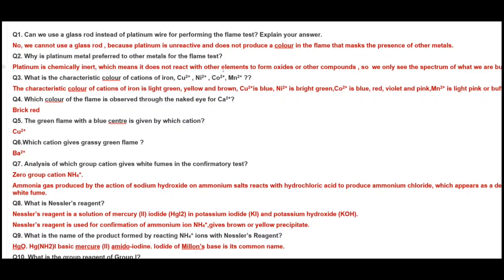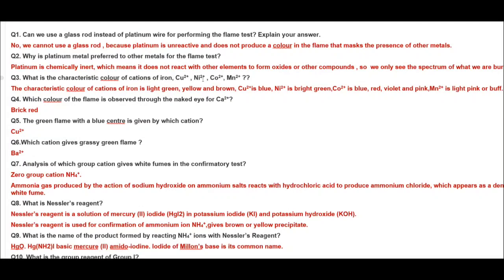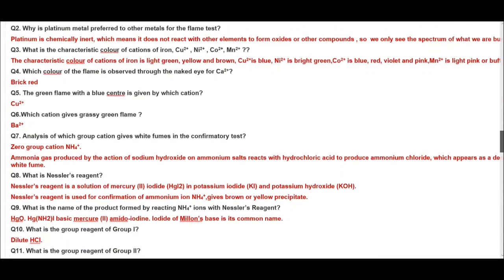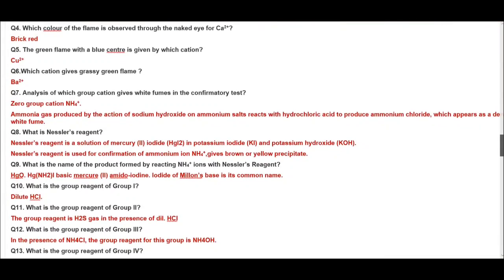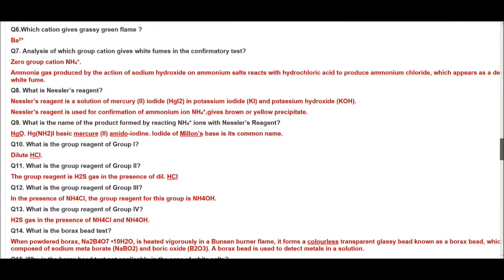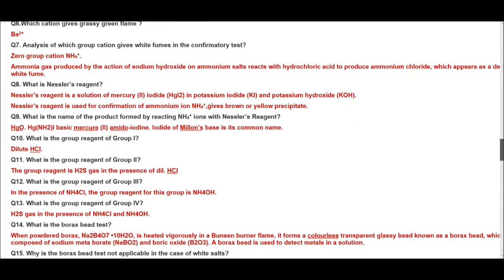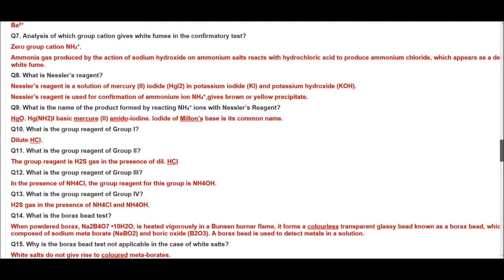Why is platinum metal preferred to other metals for flame test? Because it is chemically inert, it does not react with other elements to form oxides or other compounds which can interfere with our results. What is the characteristic color of cations of iron, copper, nickel, cobalt, manganese? Basically what is the color of salts of these ions generally - iron salts are light green, yellow and brown, copper ions blue, nickel ions bright green, cobalt blue, red, violet and pink, and manganese is light pink or buff color. Which color of the flame is observed through naked eye for calcium ion? Brick red. Green flame with a blue center by which cation? Copper ion. Which cation gives grassy green flame? Barium ion. Analysis of which group cation gives white fumes in confirmatory test? Zero group cation, that is ammonia, ammonium ion. Ammonia gas produced by action of sodium hydroxide reacts with hydrochloric acid to produce ammonium chloride which appears as dense white fumes.